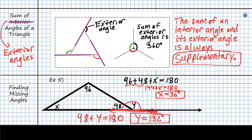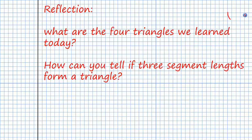Alright, so that's it for our notes today. In your reflection, what I need you guys to answer is what are the four different types of triangles that we learned today based on their angles. And how can you tell if three segments are going to form a triangle? So respond to both of those in your reflection. Let me know for your stamp and then go ahead and get started on your practice for today. If you have any questions, please let me know and have a wonderful day. Goodbye.